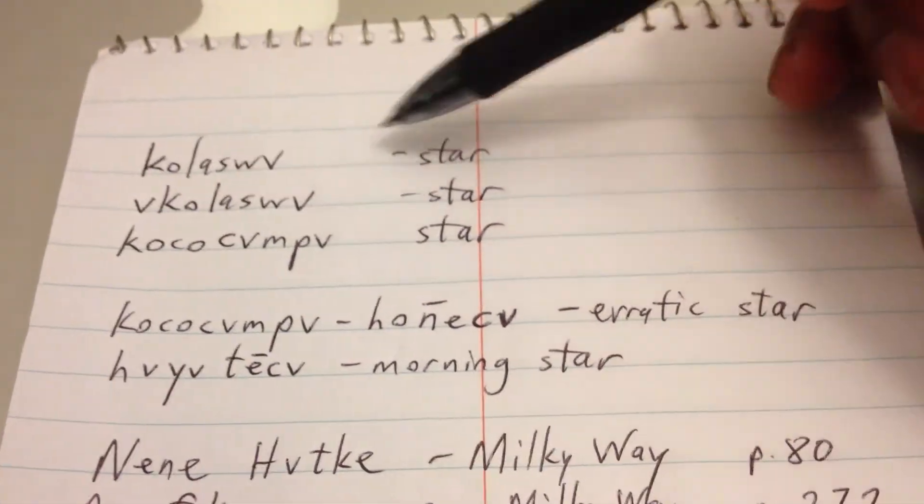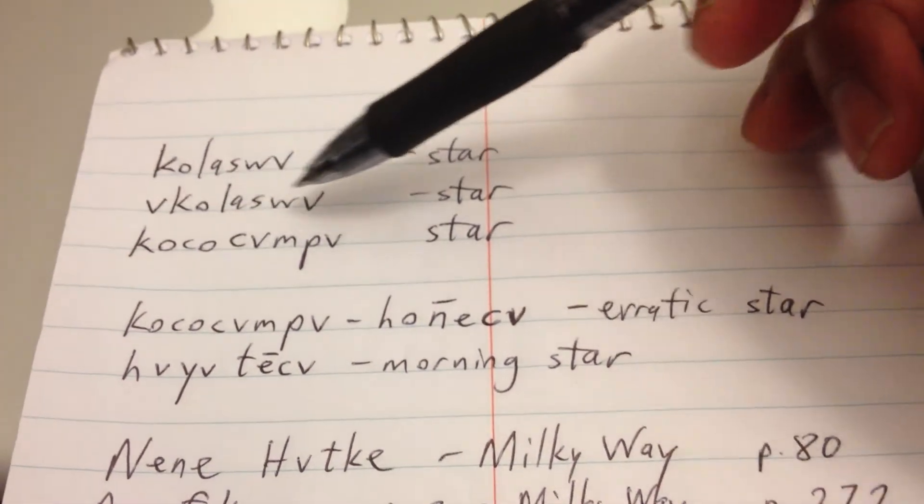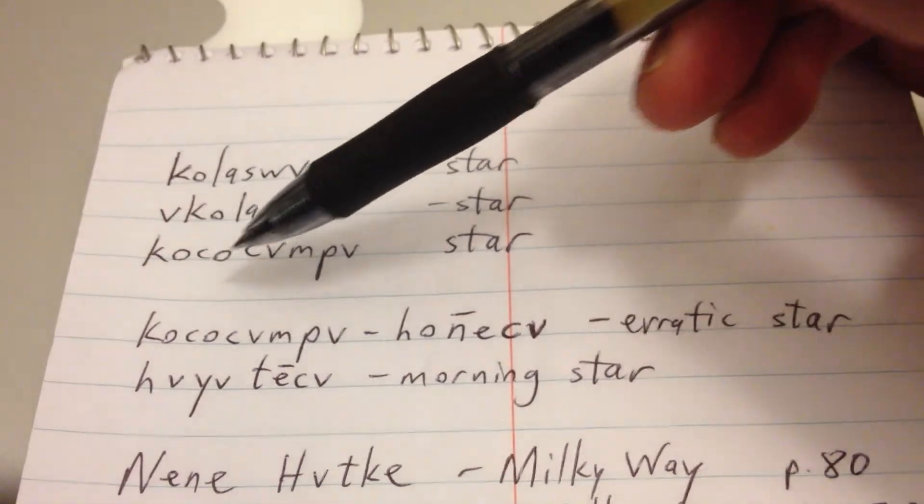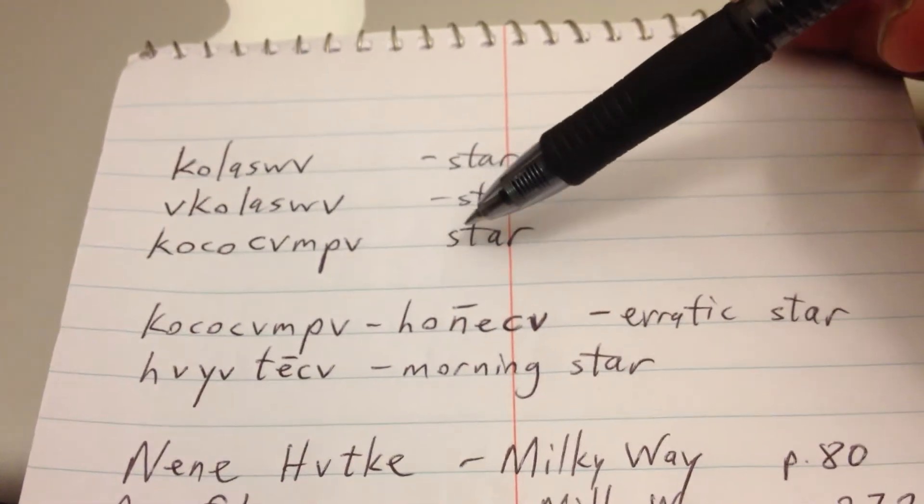So we have kalaswa for star, akalaswa also for star, kojachumpa, an older term for the word star.